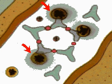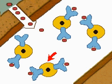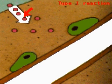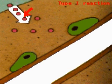A type 1 reaction is an allergic response to foreign substances, usually proteins, entering the body. It is an immediate reaction which occurs within minutes or hours of the antigen entering the body. The diagram follows the events that occur in a type 1 response.